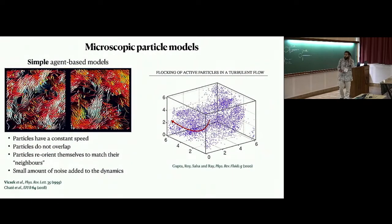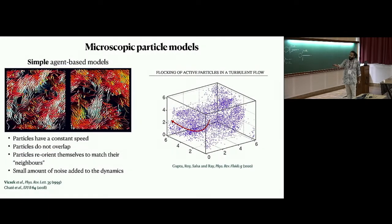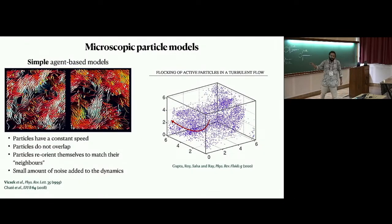How do you model such a system? You can take a microscopic route where you model particles. A very simple one is the Vicsek model, where individual particles move around with a certain velocity and respond to their neighbors — they can reorient themselves, and you can add a small amount of noise to the dynamics. This gives rise to rich flocking states.